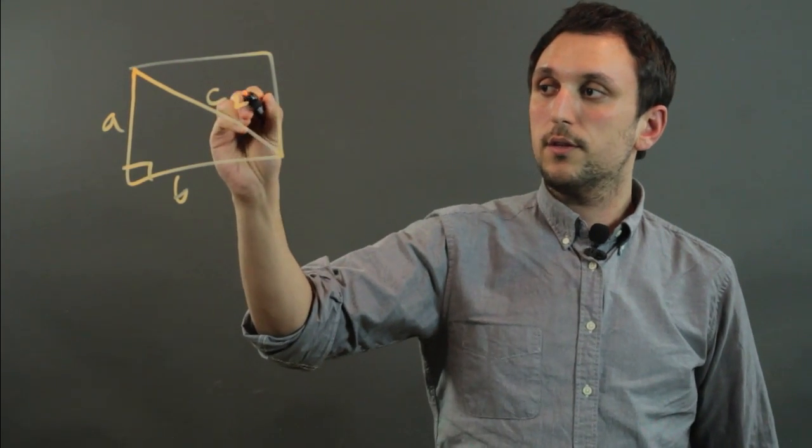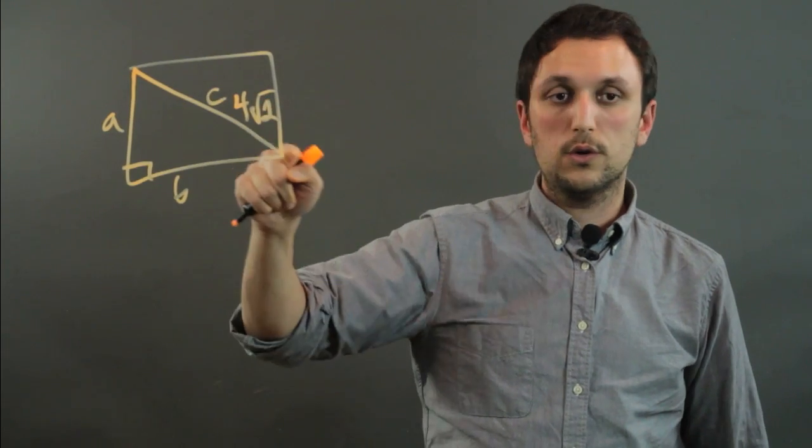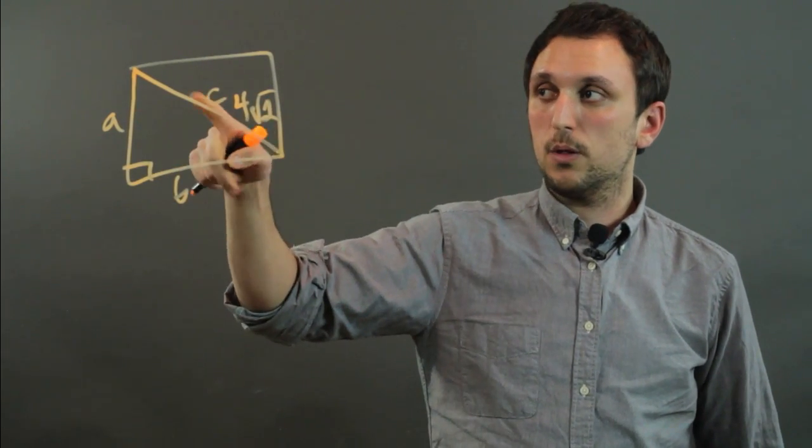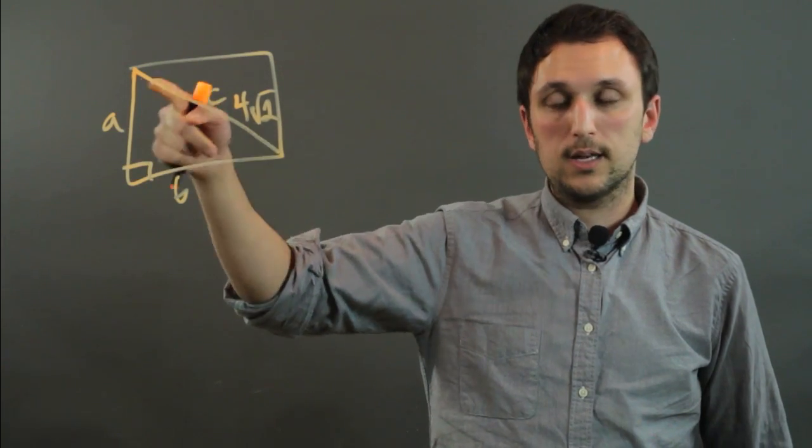So what if this side length is 4 root 2? Then we can use the Pythagorean theorem to get the side length, which can then get us the area.